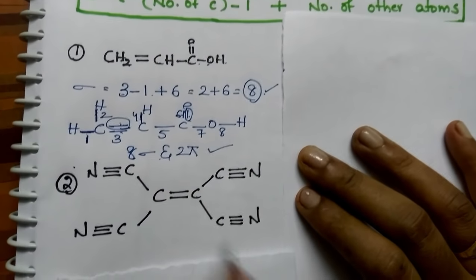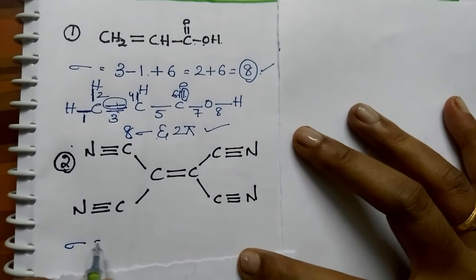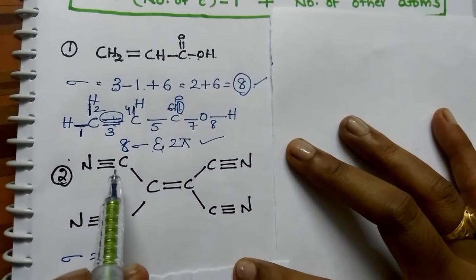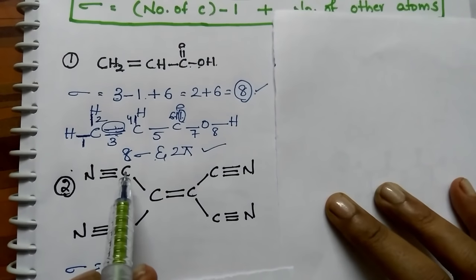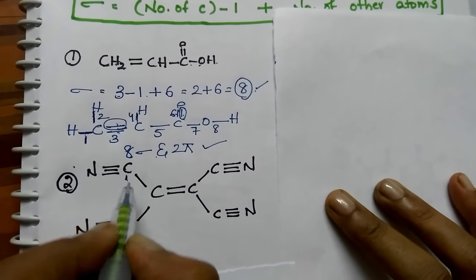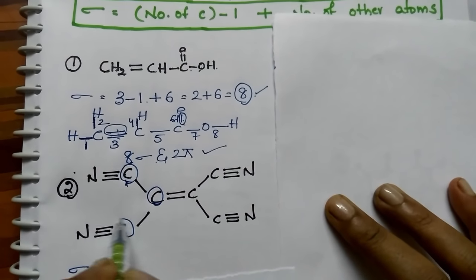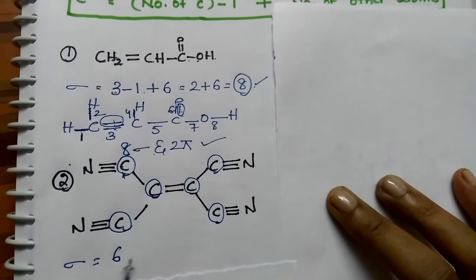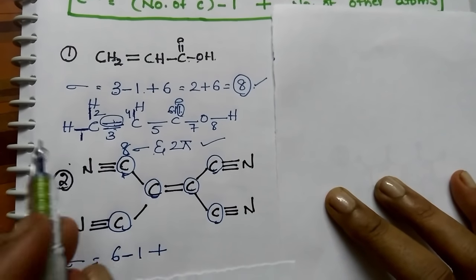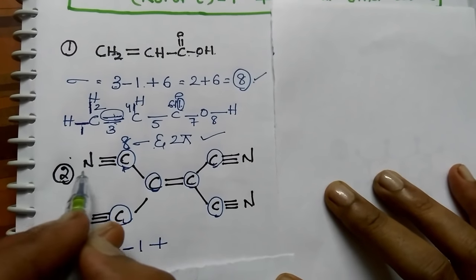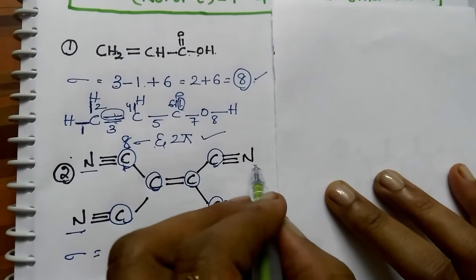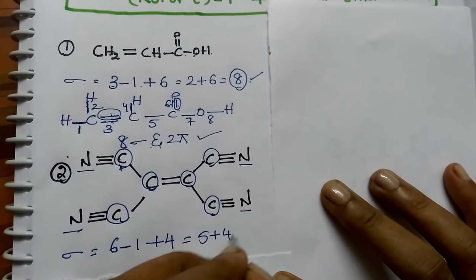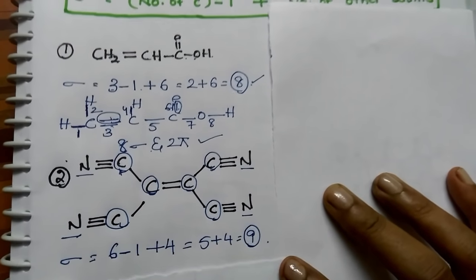Example 2. Calculate first the number of sigma bonds. The formula is number of carbons minus 1. There are 6 carbon atoms, so 6 minus 1, plus number of other atoms which is 4. So 6 minus 1 is 5, plus 4 — total number of sigma bonds are 9.